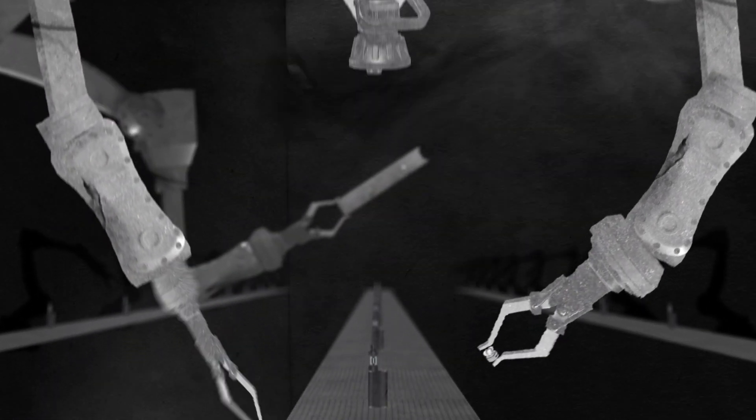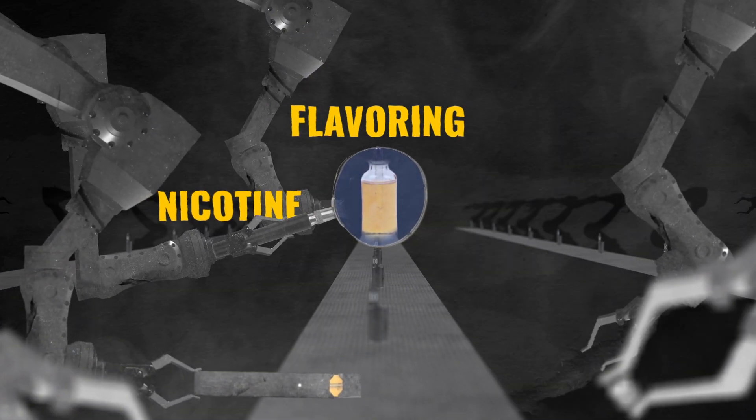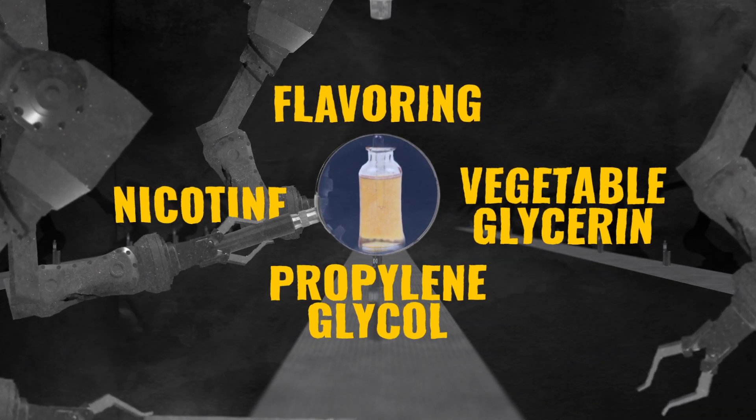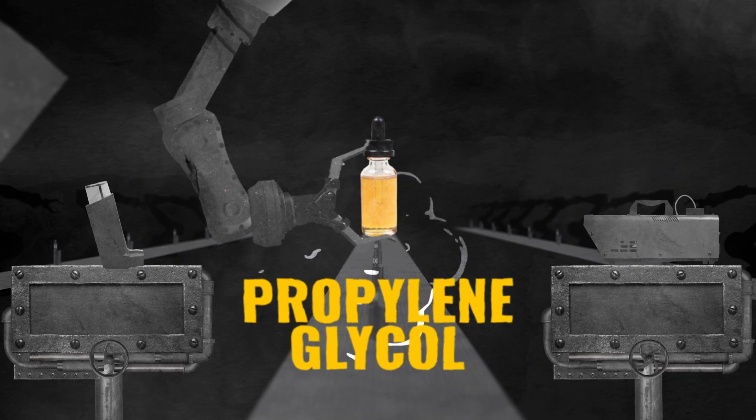The first step is to add e-liquid to the reservoir or to attach a pre-made cartridge. E-liquid is made of nicotine, flavoring, vegetable glycerin, and propylene glycol, an additive the FDA says is safe. It's the same stuff you'd find in inhalers and fog machines.